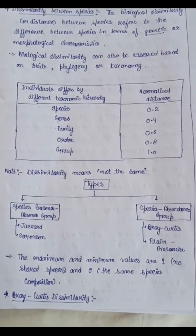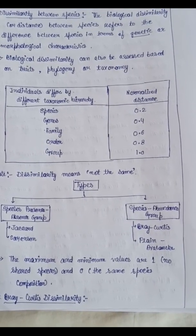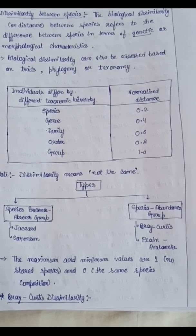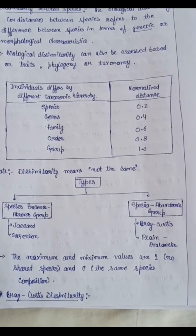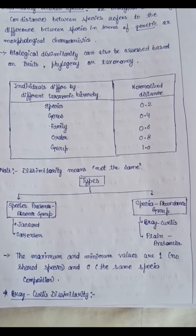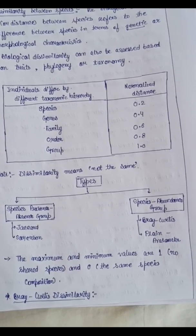Types of dissimilarity index: On the basis of presence-absence, Jacquard and Sorenson index. On the basis of species abundance, Bray-Curtis and Morisita-Horn. The maximum and minimum values are 1, meaning no shared species, and 0, depicting the same species composition. Zero denotes no dissimilarity.